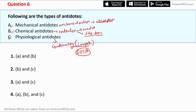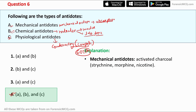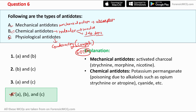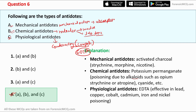The explanation confirms: mechanical antidotes (e.g., activated charcoal) treat strychnine, morphine, or nicotine poisoning; chemical antidotes (e.g., potassium permanganate) treat alkaloid poisoning from opium, strychnine, or atropine; and physiological antidotes (e.g., EDTA) are effective in heavy metal poisoning such as lead, copper, cobalt, cadmium, iron, and nickel.